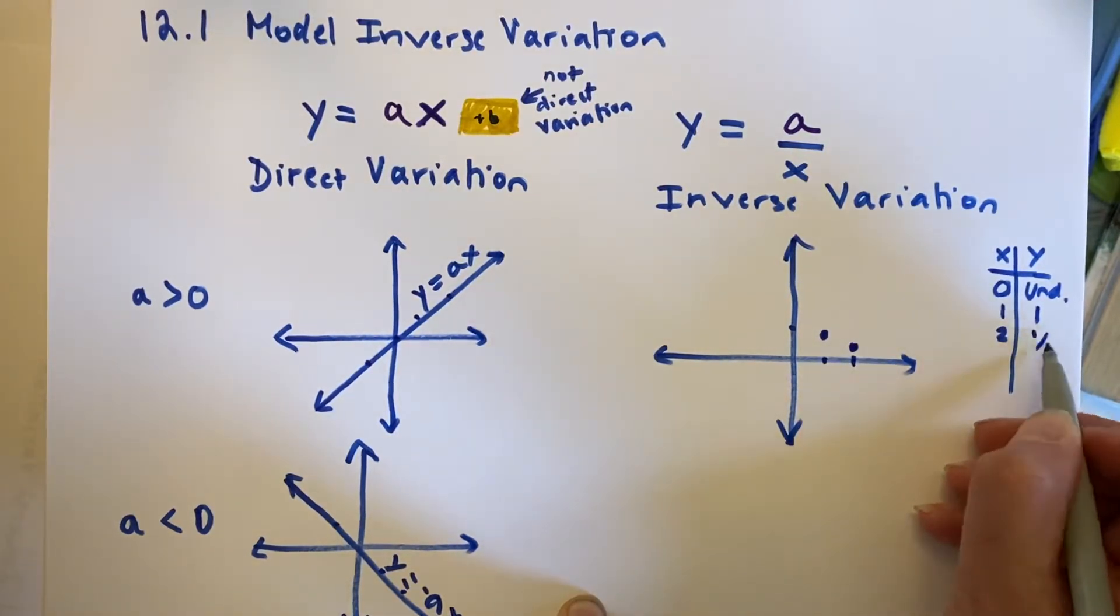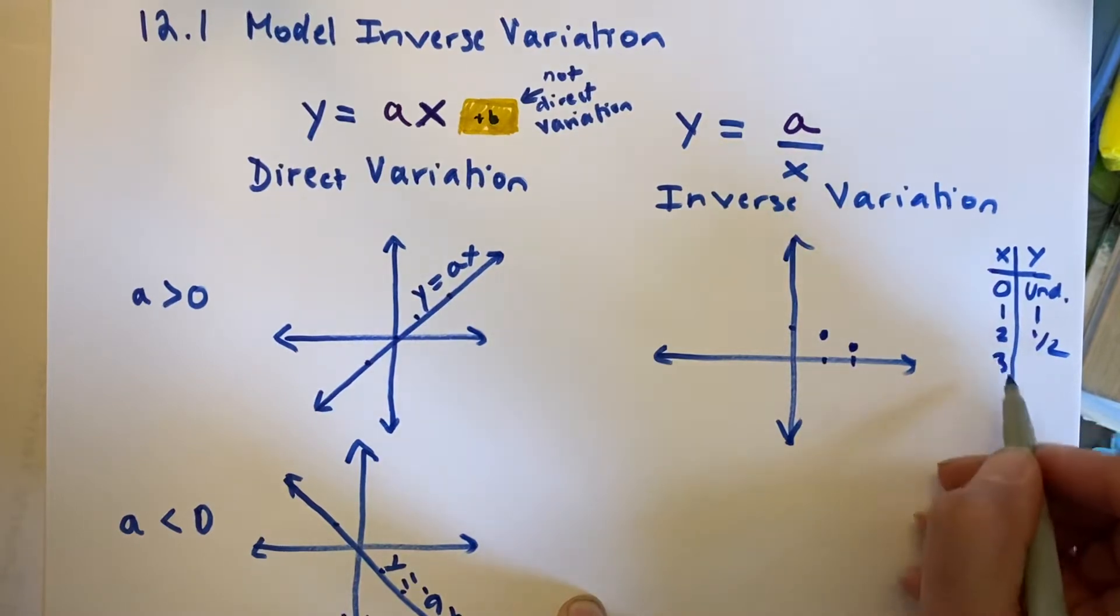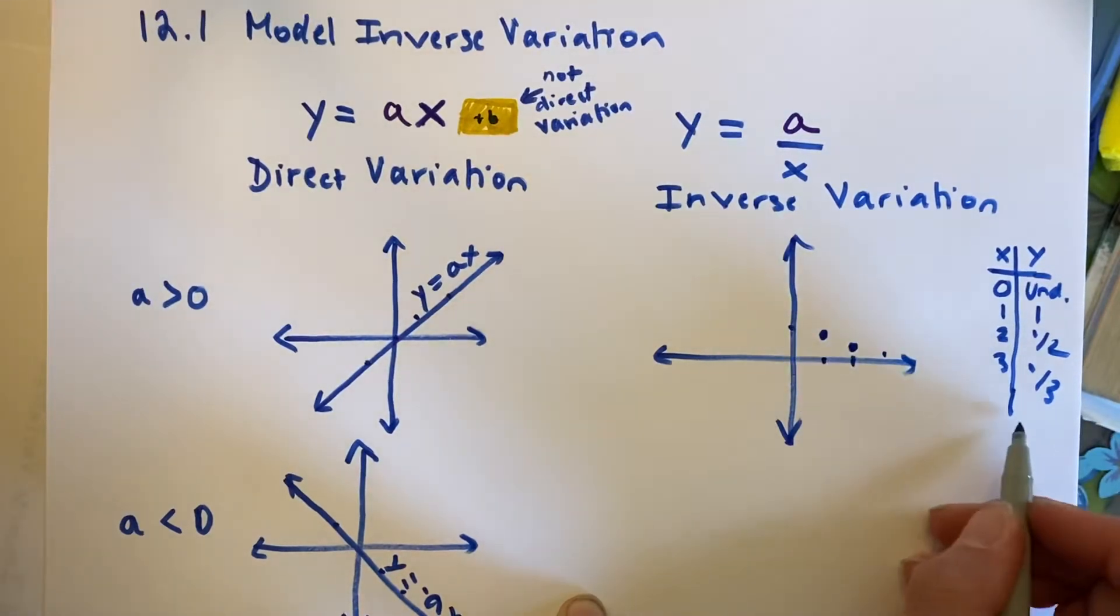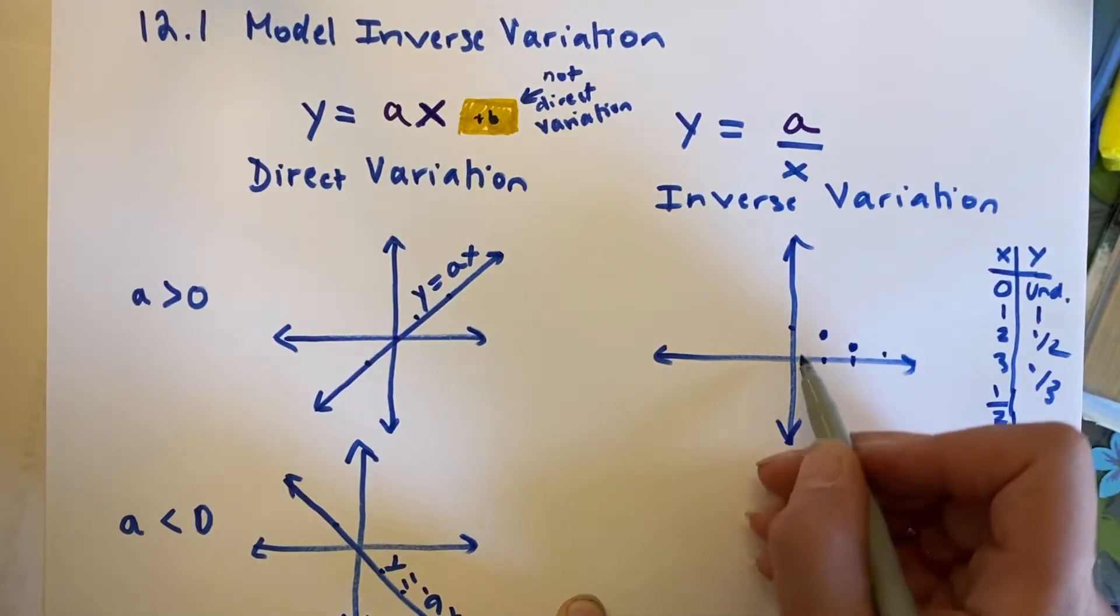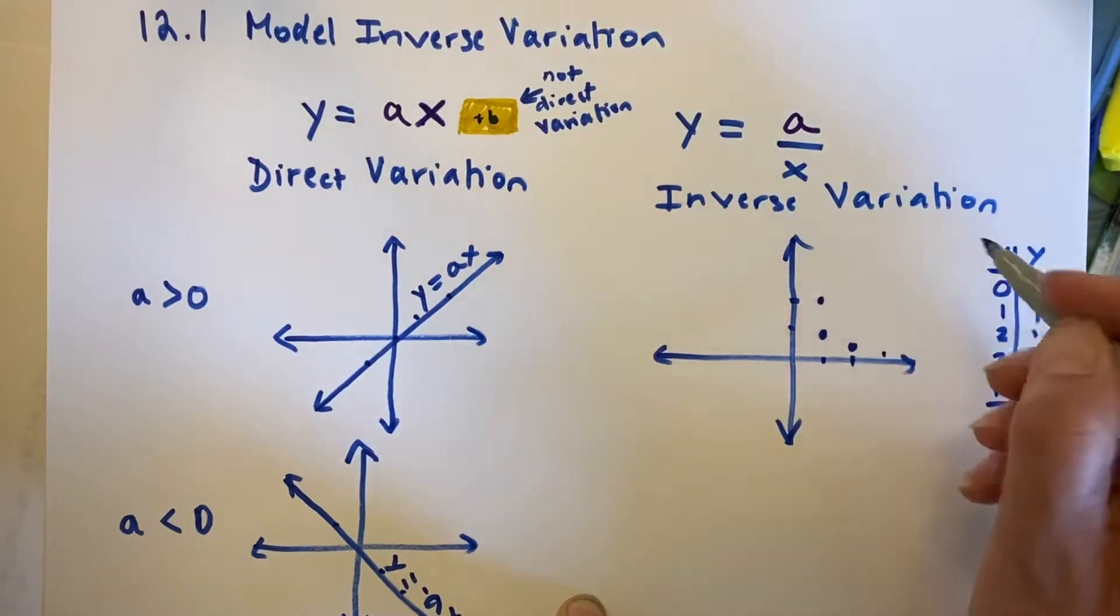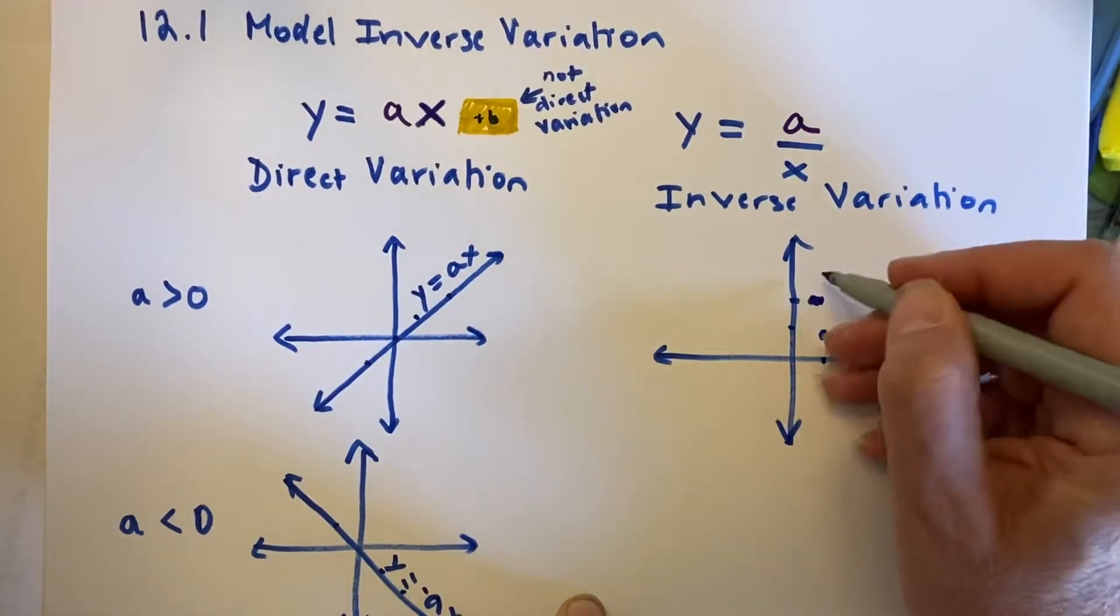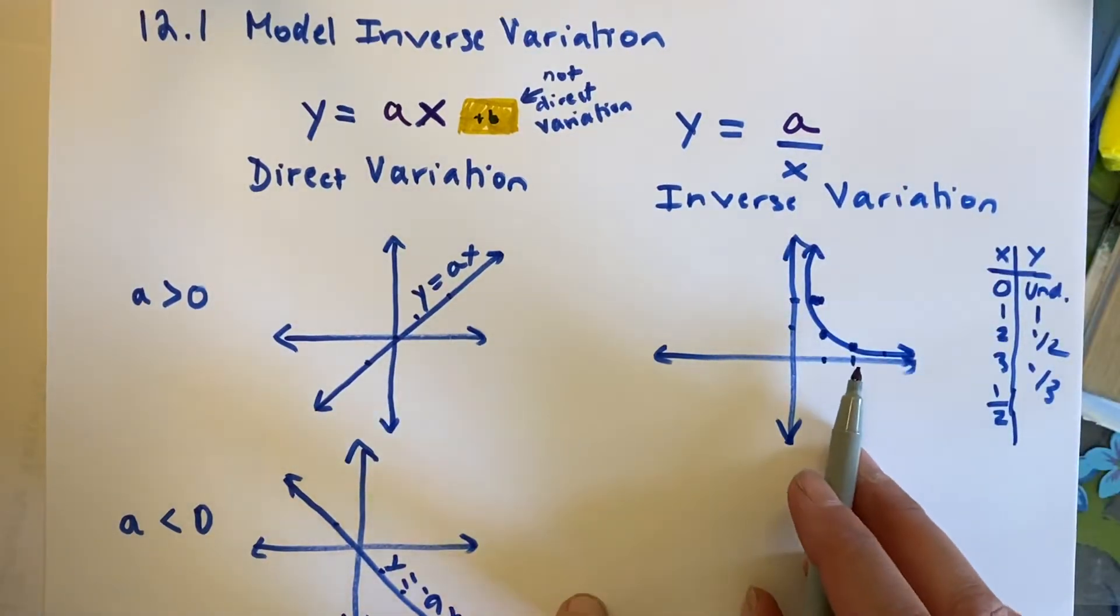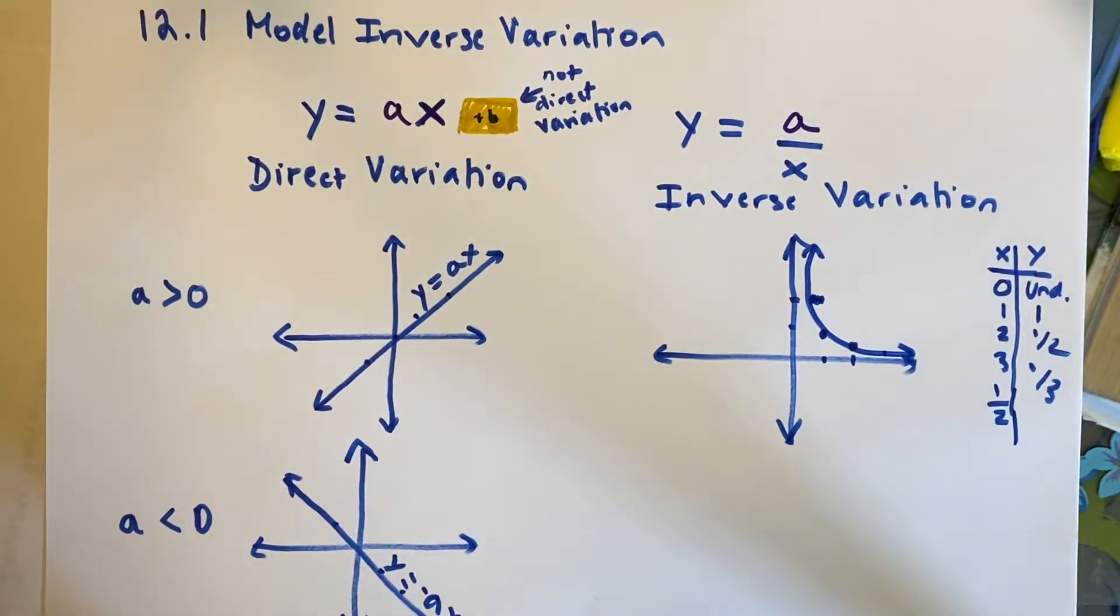x is 2, y is 1 half. And x is 3, y is 1 third. And x is 4, etc. Now, what if I go the other direction? What if I have x is 1 half? Well, if I have x as 1 half, 1 divided by 1 half is 2, so I'm going up this way. And so, here you go. So, this is half of what this graph looks like. And now we're going to go and look at the other half.